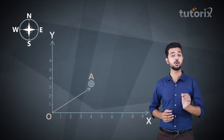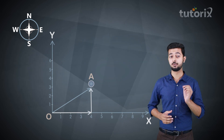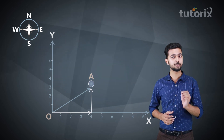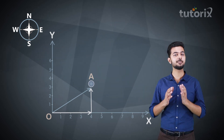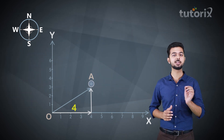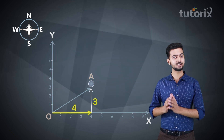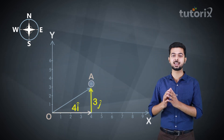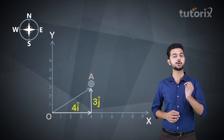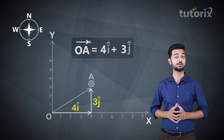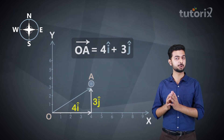Let's call the position vector of car A as vector OA. Vector OA can be divided into two components: one component along the x-axis and another component along the y-axis. The component along the x-axis has a magnitude of 4 km and is written with i-cap, and the component along the y-axis has a magnitude of 3 km and is written with j-cap. So we can write vector OA equals 4î + 3ĵ. Here, we have successfully resolved vector OA as the sum of its individual components.